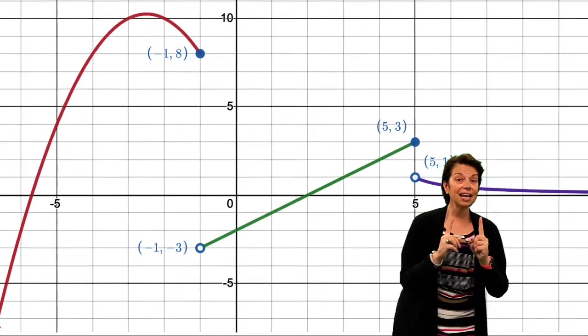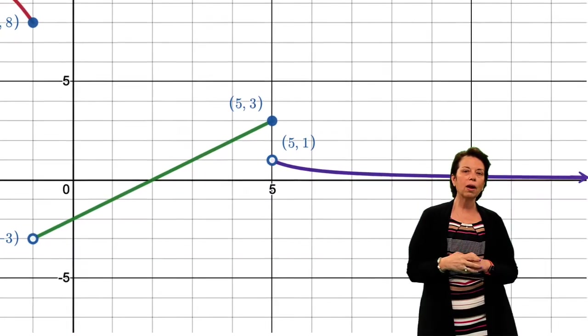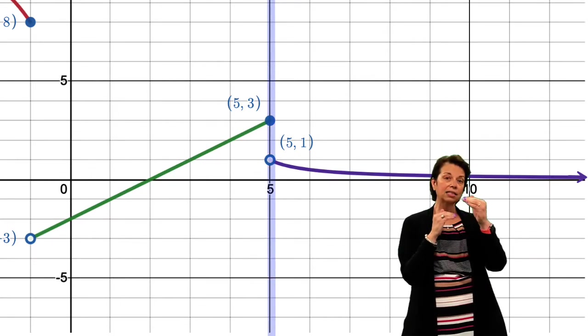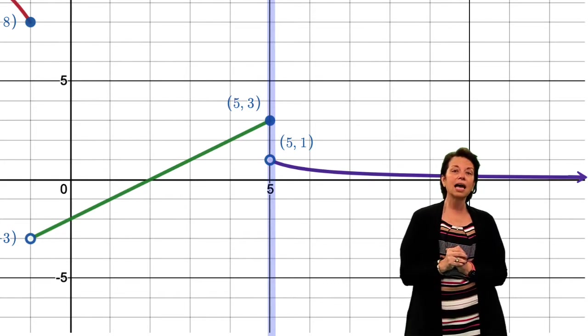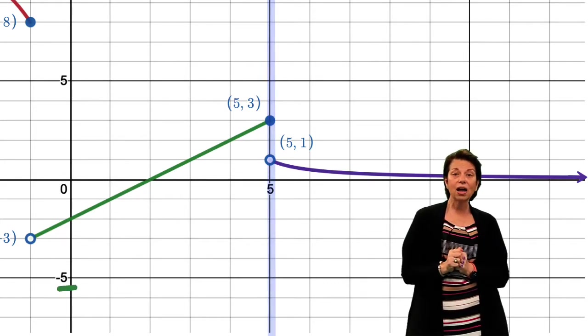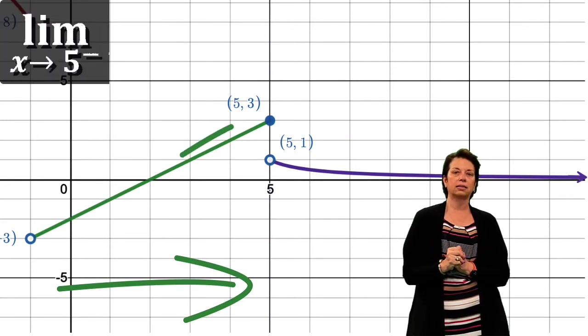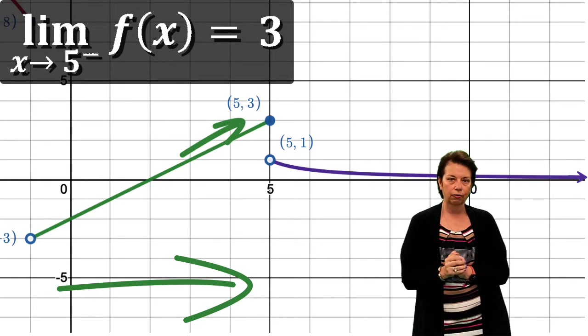Also using the same graph, now we can actually jump to another spot. We can look at the graph as x approaches 5, positive 5. Yet again, we see a graph that has a break there. And so if we look here as x approaches positive 5 from the left side, we see that the limit of that x approaching positive 5 from the left is equal to 3 itself.